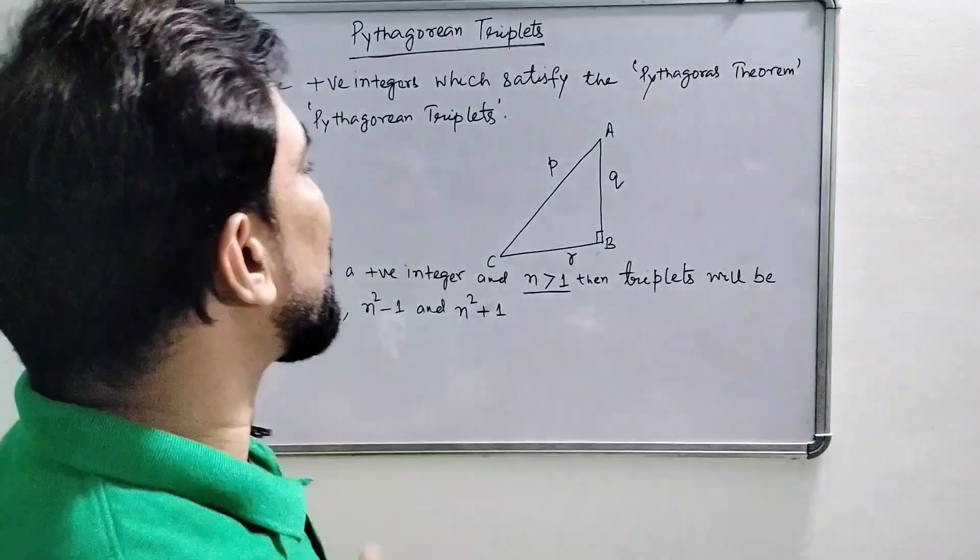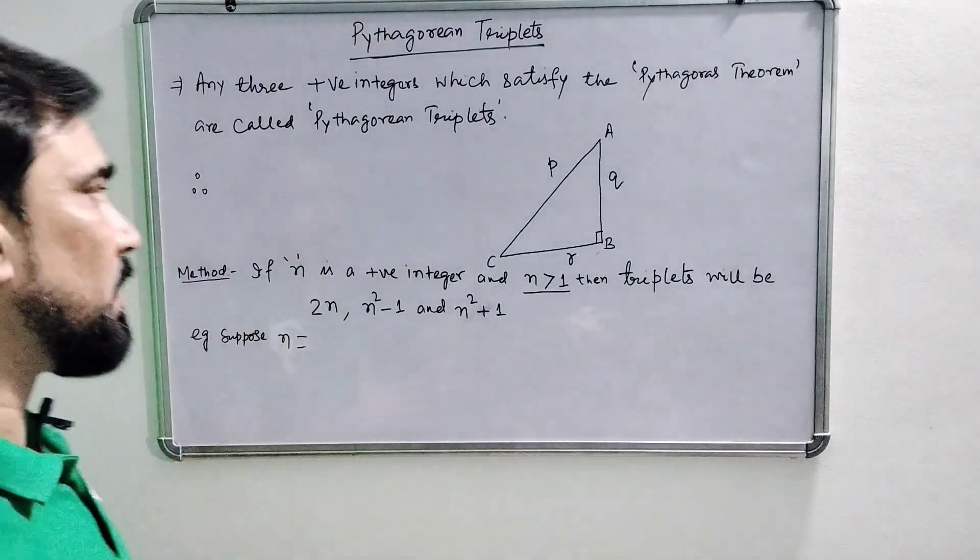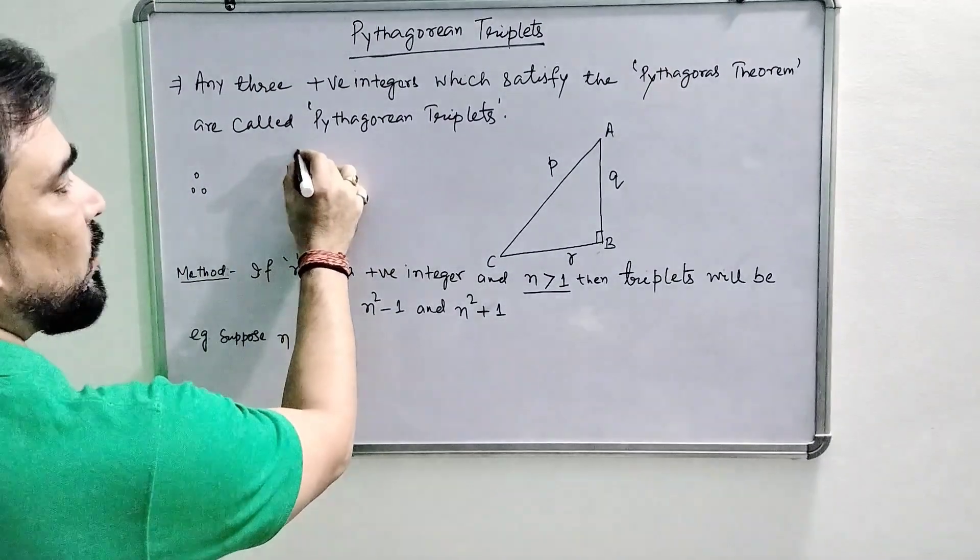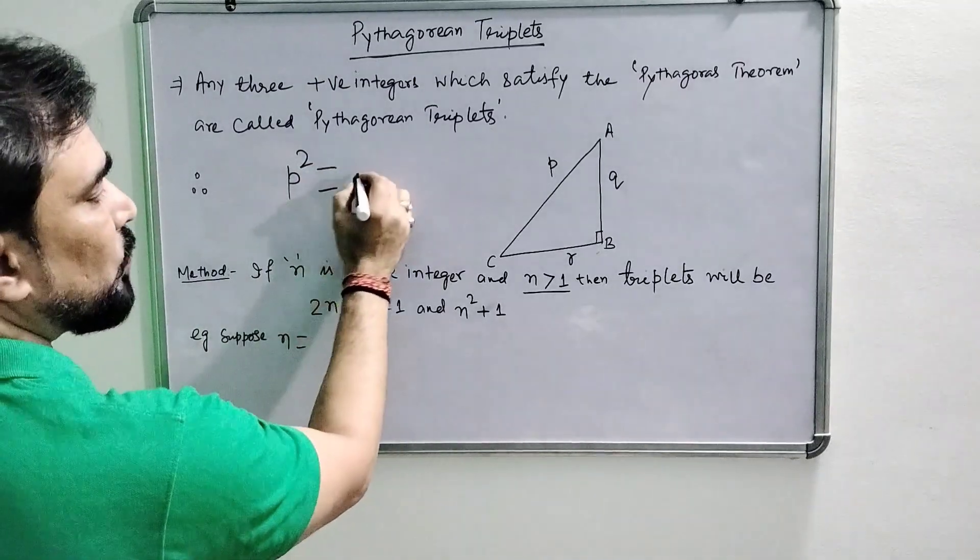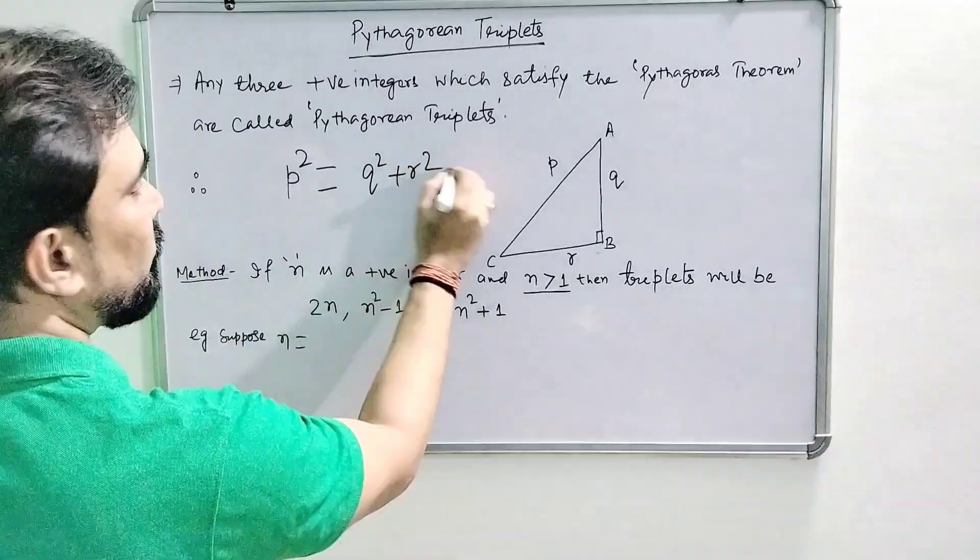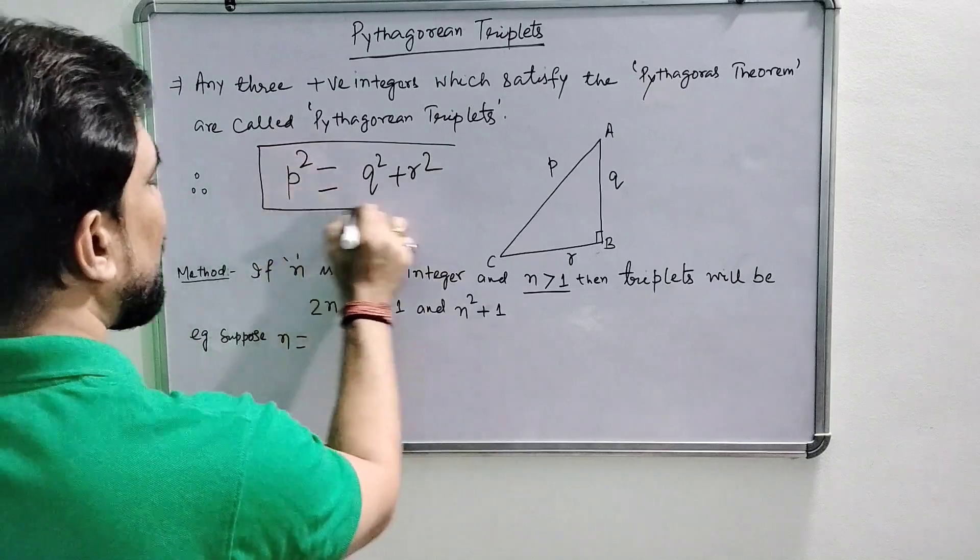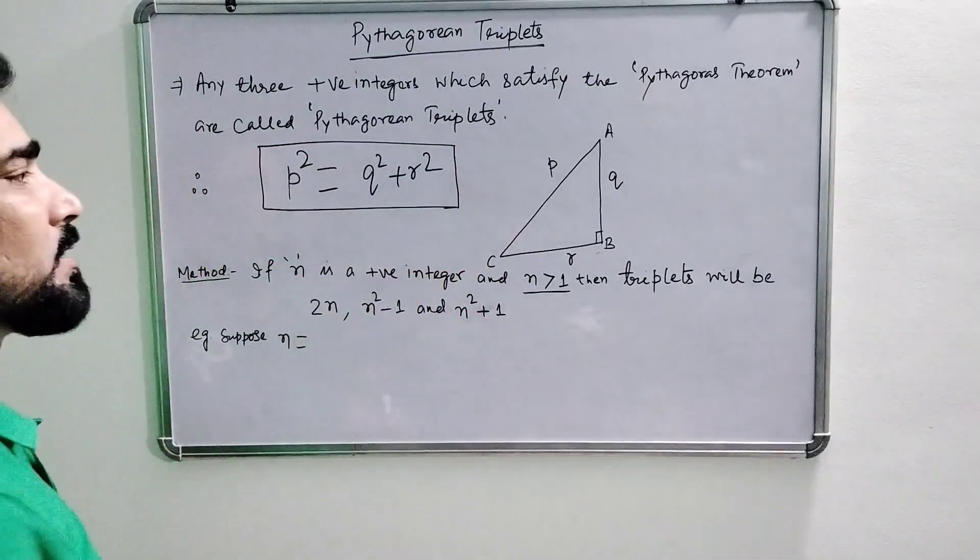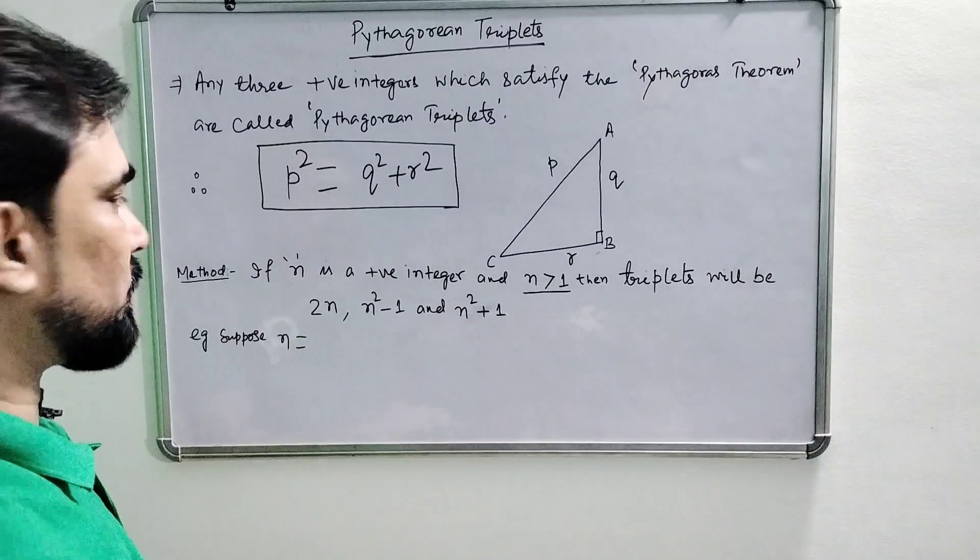Any three positive integers which satisfy the Pythagoras theorem are called Pythagorean triplets. If three integers are in the form P² = Q² + R², then from this figure, if these integers follow this criteria, they are Pythagorean triplets.